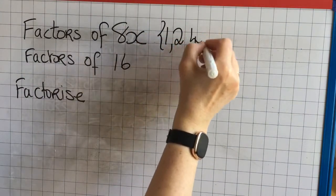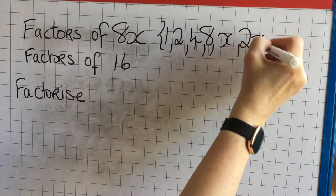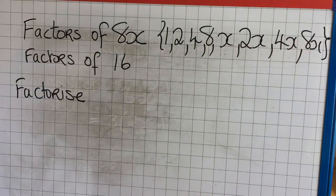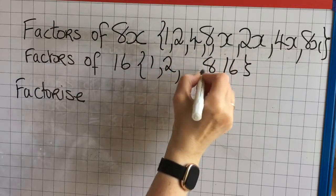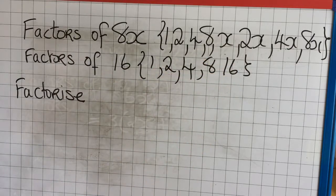Here I'm writing out the factors of 8x: 1, 2, 4 and 8 and then 1x, 2x, 4x and 8x. Then I'm writing out the factors of 16.